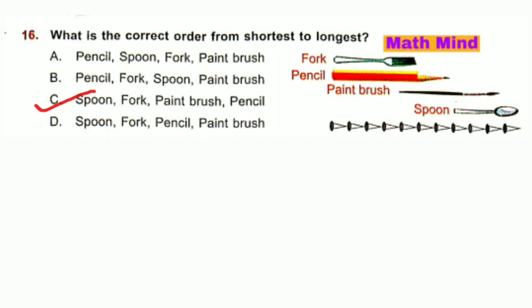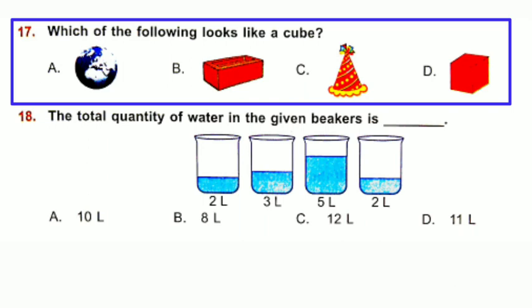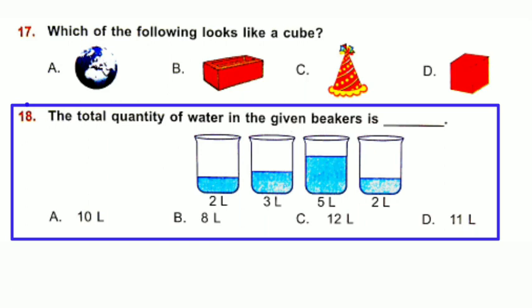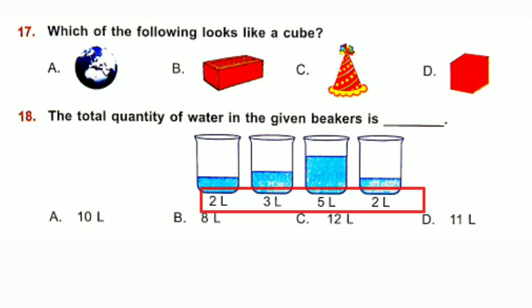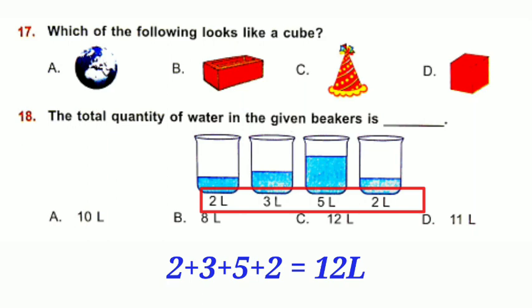Question number 17: Which of the following looks like a cube? Option D is correct — this is a cube. Question number 18: The total quantity of water in the given beakers is how much? All are in the same unit — litres. Adding all: 2 + 3 + 5 + 2 = 12 litres. Option C is correct.